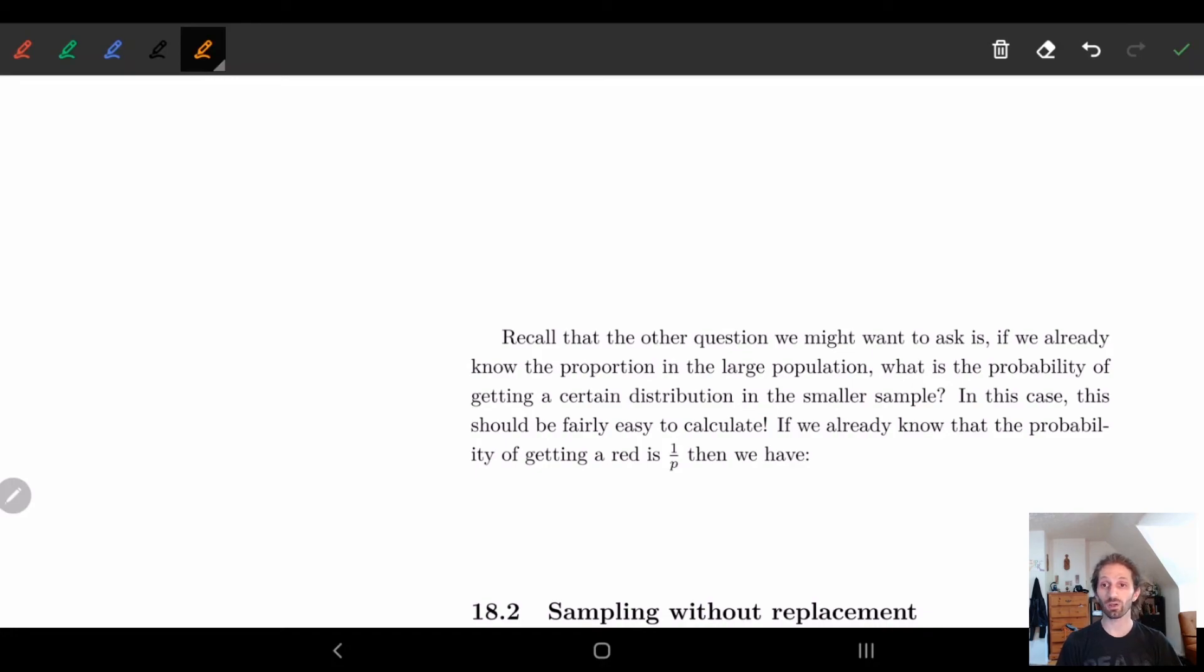So in this case, what we know is if we already know the proportion in the large population. So say we know R.